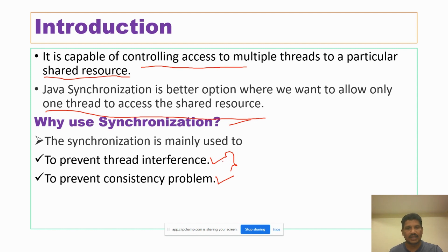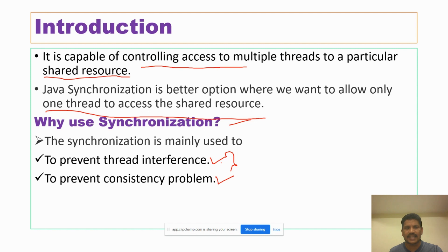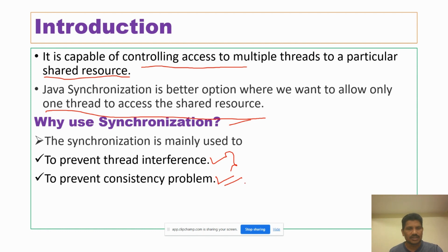I will give you one example. Consider a bank account where there are two threads: one thread for withdraw and another thread for deposit. If the two threads are trying to access the account at the same time, it provides the wrong result and our data is not consistent. That's why, to prevent the consistency problem, if you want to make the data consistent, we must use synchronization.